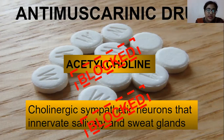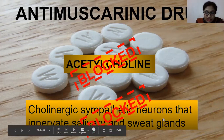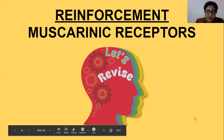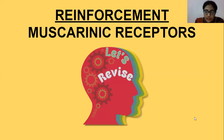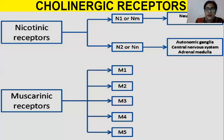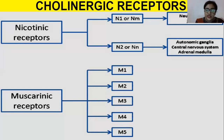Secondly, these drugs diminish the cholinergic sympathetic neurons that innervate salivary and sweat glands. Before jumping into the depth of anti-muscarinic pharmacology, it is important to reinforce muscarinic receptors. When we talk about cholinergic receptors, there are two receptors innervating the cholinergic ends: nicotinic receptors and muscarinic receptors.